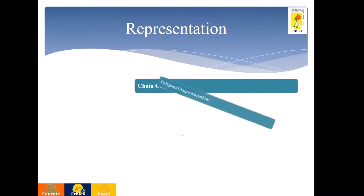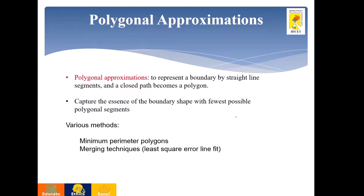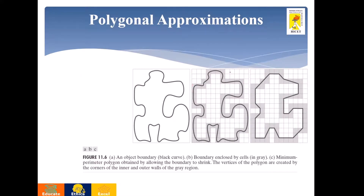The next representation after chain code is polygonal approximation. Polygonal approximation represents the boundary by means of a polygon. It can be done by minimum perimeter polygon or merging technique. In minimum perimeter polygon, you represent the boundary with the minimum perimeter by shrinking the boundary. You have to find the polygon such that the entire boundary is incorporated within your polygon, ensuring that only the minimum number of polygon vertices are used. After incorporating it, just relax the rubber band — consider this as a stretched rubber band, relax it, and you will get the representation.